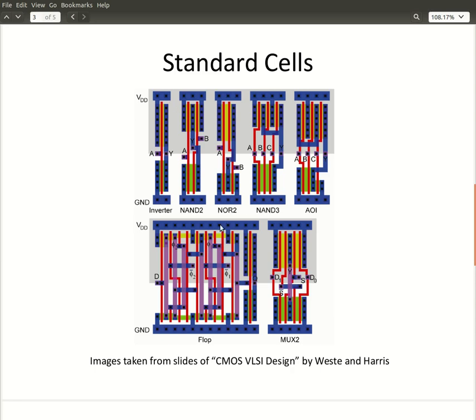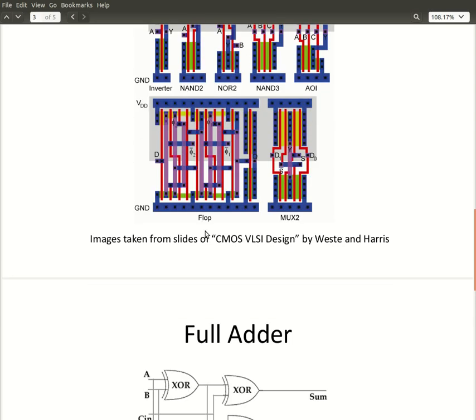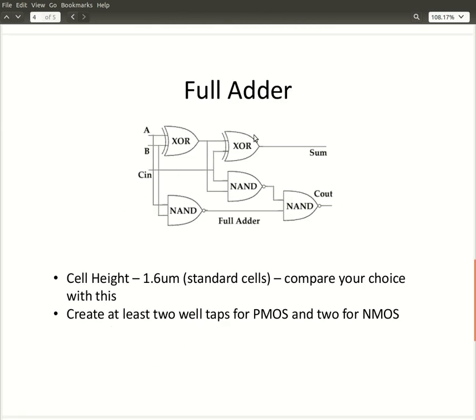Our aim, of course, in this assignment is to create the layout of a simple full adder. Here is the schematic of a full adder formed using 2 XOR gates and 3 NAND gates. The height of cells in the standard cell library is around 1.6 micrometers. It would be good if you can also make layouts of individual gates and the complete layout of the full adder to this specification, but if you can't, it would be interesting to see how close you can get.